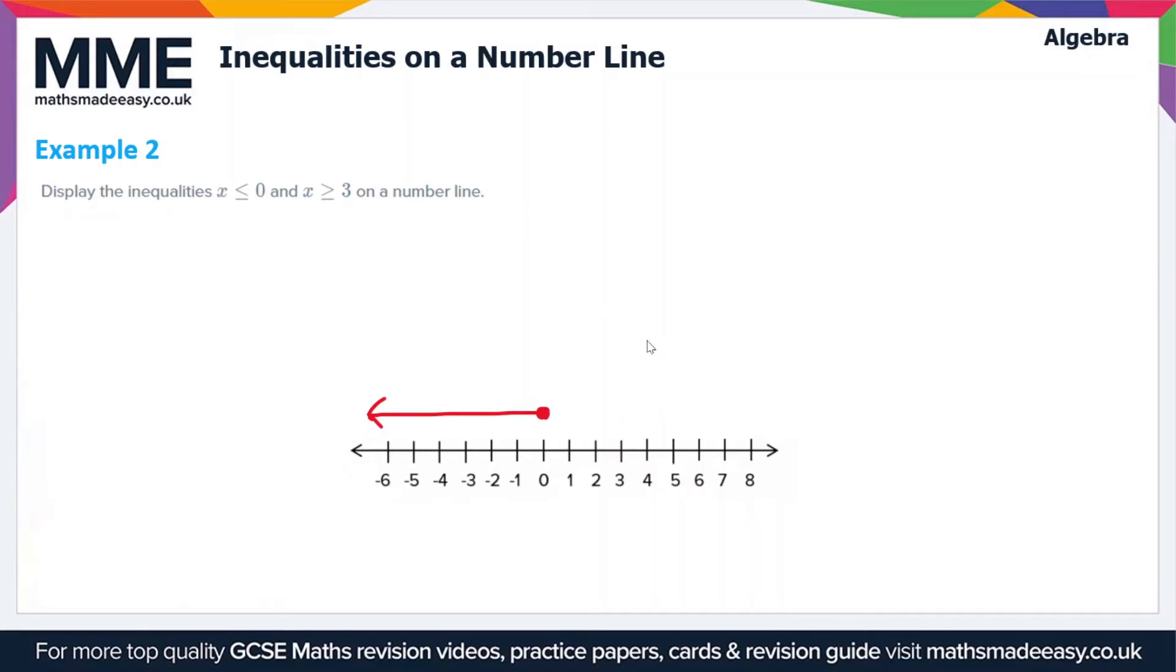For the other one, we'll use a blue color. x ≥ 3 - again we fill in the circle that we'll put above 3 and draw an arrow going to the right. So these are the two inequalities.